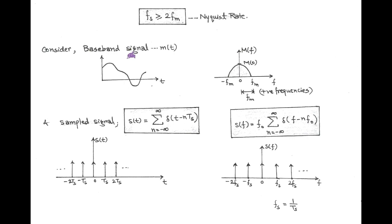So according to the Nyquist rate, the sampling frequency must be greater than or equal to twice of fm. Now we explain the sampling theorem for the recovery of the original message signal in detail. First, we consider any arbitrary baseband or modulating signal M(T). In the frequency domain, its arbitrary spectrum is capital M(f), which has a bandwidth of fm — called the modulating frequency. And to obtain the sampled version of the baseband signal M(T), we take a sampled signal S(T), also called the carrier signal. Mathematically, the sampled signal S(T) equals the summation from n = -infinity to +infinity of delta(T - nTs), where Ts is called the sampling period.